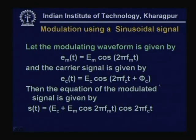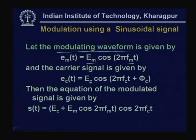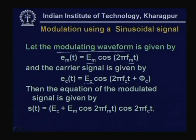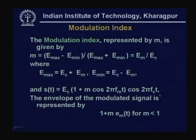Let the modulating waveform be represented by: E_m(t) = E_m · cos(2πf_m · t). The carrier is E_c(t) = E_c · cos(2πf_c · t + φ_c), where E_c is the maximum amplitude, f_c is the frequency, and φ_c is the phase. The equation of the modulated signal is S(t) = [E_c + E_m · cos(2πf_m · t)] · cos(2πf_c · t). There is an important parameter called the modulation index, represented by m.